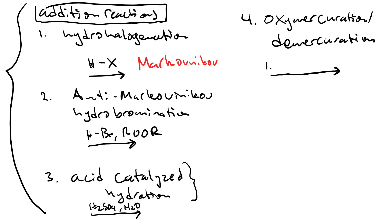Oxymercuration-demercuration will give you a Markovnikov alcohol without rearrangement. The oxymercuration step, you use mercuric acetate HgOAc2 and water.